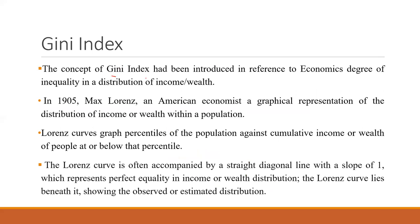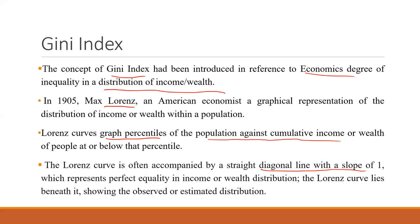The Gini index was introduced by reference to the economics degree. Max Lorenz gave this graphical representation showing the inequality of income for different people — maximum money was with fewer people. The Lorenz curve graphs percentiles of the population against cumulative income or wealth, and is accompanied by a straight diagonal line of slope one representing perfect equality.